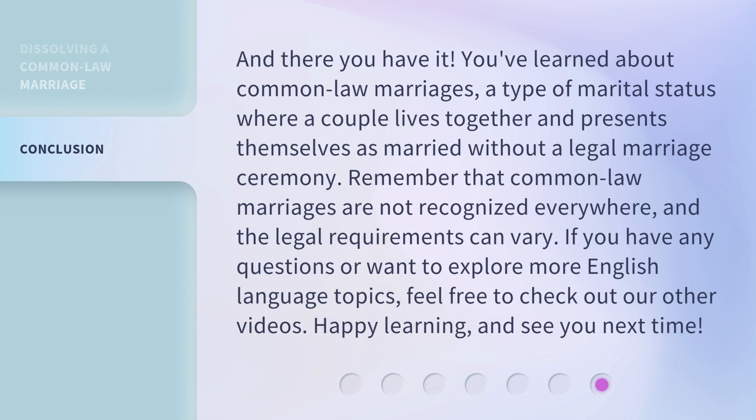And there you have it. You've learned about common law marriages, a type of marital status where a couple lives together and presents themselves as married without a legal marriage ceremony. Remember that common law marriages are not recognized everywhere, and the legal requirements can vary. If you have any questions or want to explore more English language topics, feel free to check out our other videos. Happy learning, and see you next time.